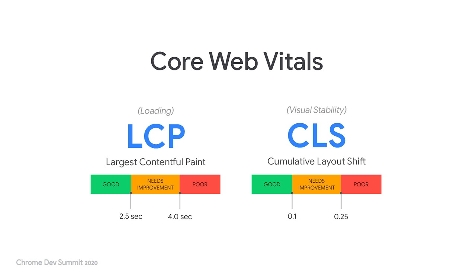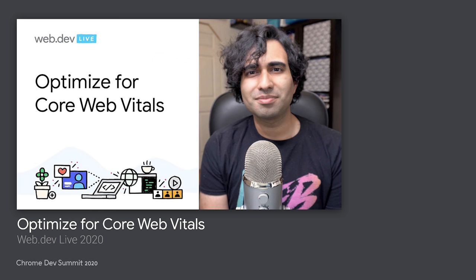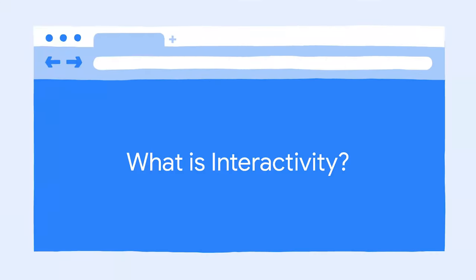As a refresher, the other two pillars of Core Web Vitals are loading and visual stability, and you can learn more about that in Adios Mali's talk from Web.DevLive, linked down below. First, let's talk about interactivity — what are we actually trying to improve and optimize for the user?